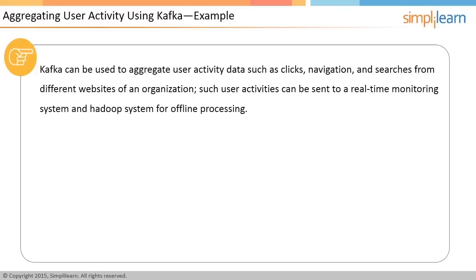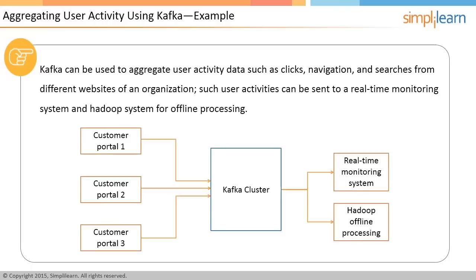An example is illustrated in the image. The information from customer-facing portals is sent in real-time to the Kafka cluster. The Kafka cluster consists of one or more servers that process the messages in parallel. The information is sent to a real-time monitoring system to monitor user clicks, navigation, and searches, and is also saved in a Hadoop system for offline processing.